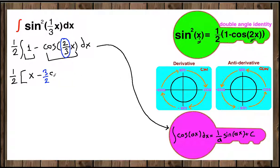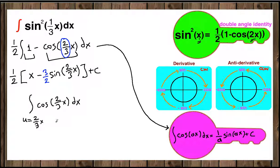Or you can use u-substitution. Let me show that. For the integral of cos(2/3 x) dx, let u equal 2/3 x. Then du will be the derivative of this, which is 2/3 dx.